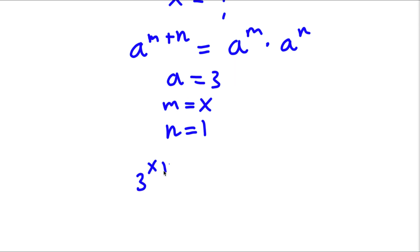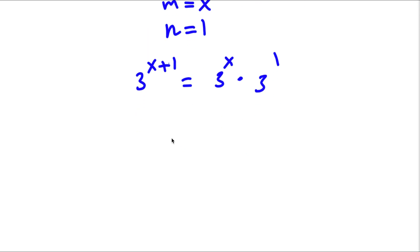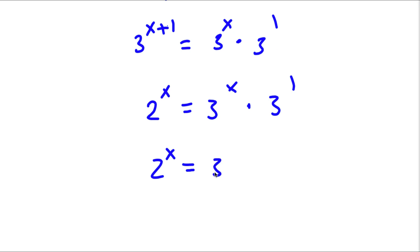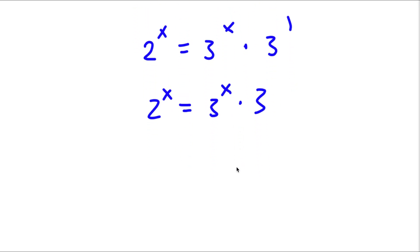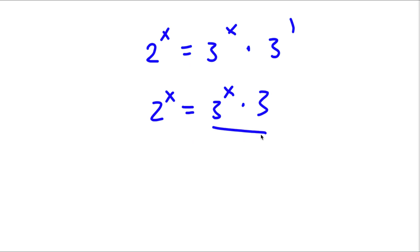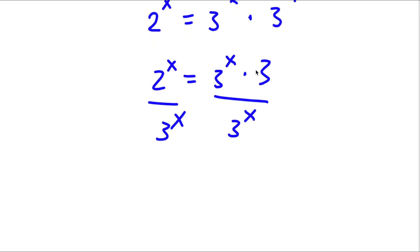So 3 to the power of x plus 1 equals 3 to the power of x times 3 to the power of 1. Now 3 to the power of 1 is simply 3. So now I have 2 to the power of x is equal to 3 to the power of x times 3. And now I can divide both sides by 3 to the power of x, so those cancel, leaving 2 to the power of x over 3 to the power of x is equal to 3.